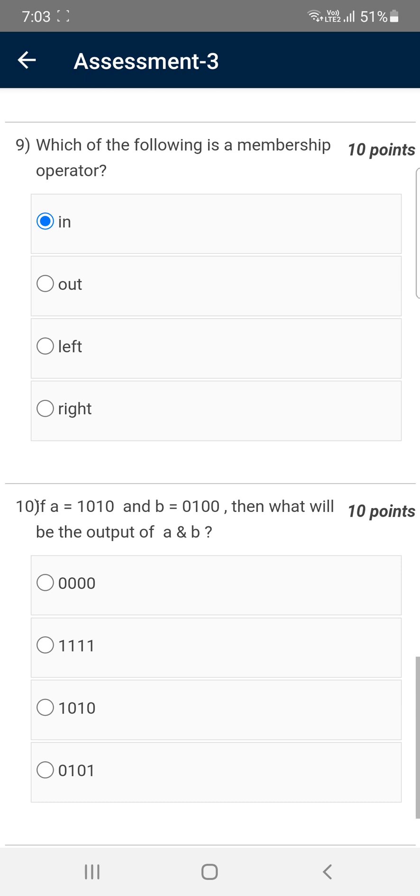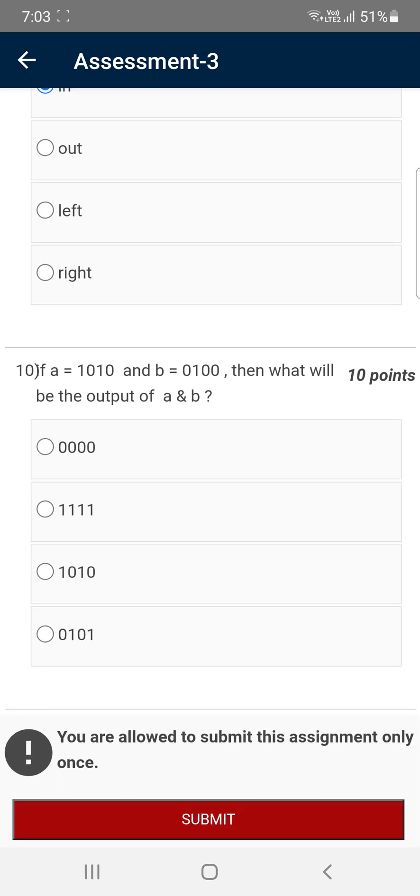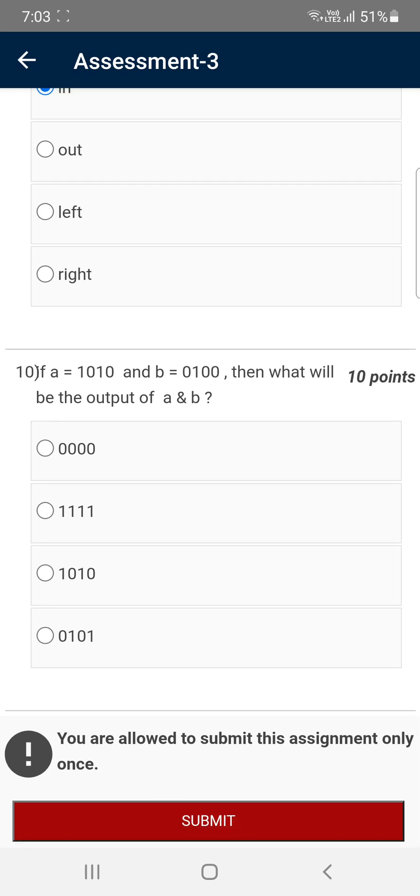Moving on to the tenth question: If a equals 1010 and b equals 0100, then what will be the output of a ampersand b? Here the symbol ampersand represents AND operator. That means if both zeros then the answer will be zero. And even though there is one and zero, then answer will be zero. Only if there are two ones, then only we will get one as output. Here compare the first bit of a with first bit of b: one and zero, so we will get first bit zero. Like that there are no ones corresponding to both a and b, so everything will become zero. The answer is first option.